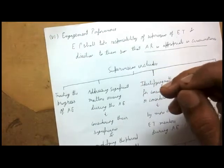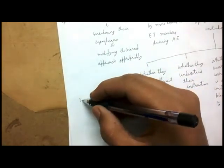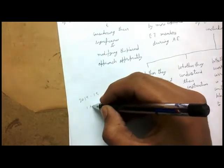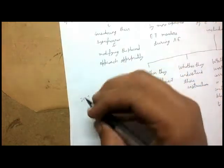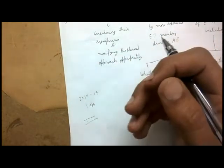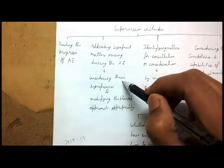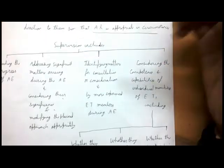The engagement partner also addresses significant matters arising during the audit engagement and modifies the planned approach appropriately. For example, if during the audit you find material misstatements in a particular area, you need to increase the number of items examined in that area. You also identify matters for consultation by more experienced engagement team members during the audit.